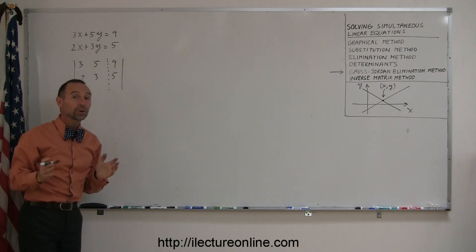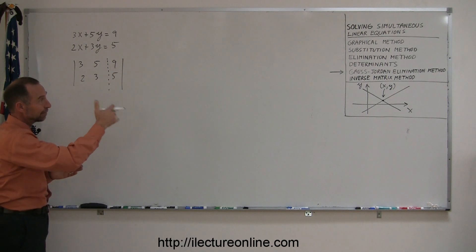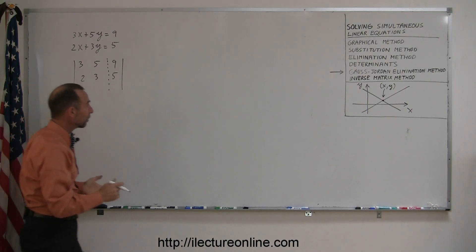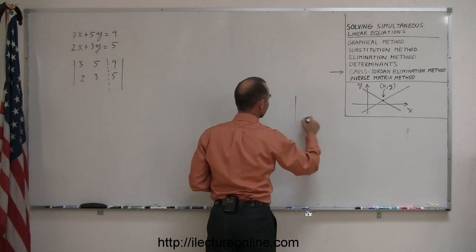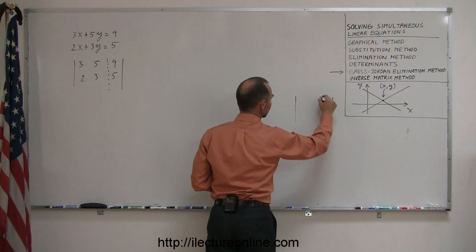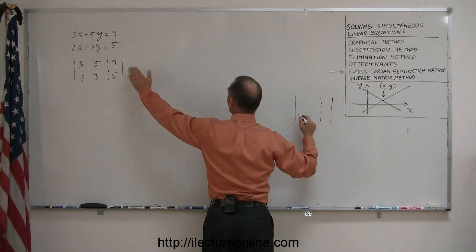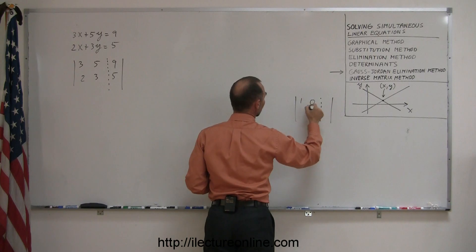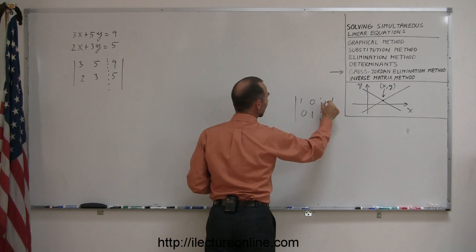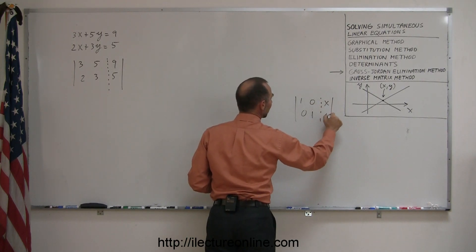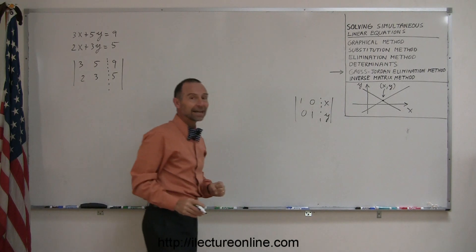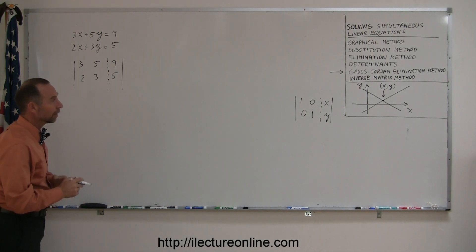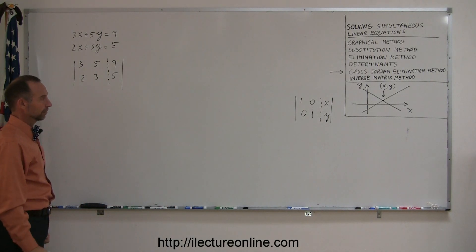Then you're going to go through a set of operations dictated by the Gauss-Jordan elimination method until you end up with something where on the left side you get a 1 and a 1 on the diagonal and a 0 and 0 everywhere else. You'll then be able to simply read off the x and y values — the coordinates of the point where the two lines cross.